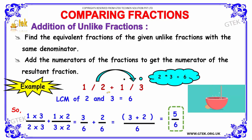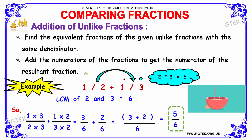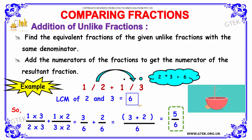The question is 1 divided by 2 plus 1 divided by 3. In order to make the denominator common, we need to find the LCM. Since the denominators are 2 and 3, the LCM of 2 and 3 is 6. Now, for the first portion 1 divided by 2, we need to make the denominator equal to 6.